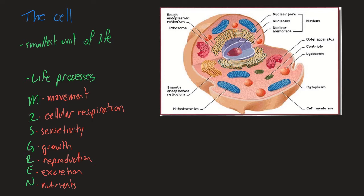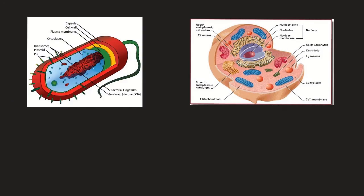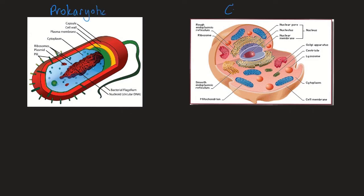Cells are the smallest unit of life and they're capable of all of these life processes that we can summarise as MRS GREN. Now we're going to have a look at the different types of cells. Cells can be divided into two key types: prokaryotic cells and eukaryotic cells.